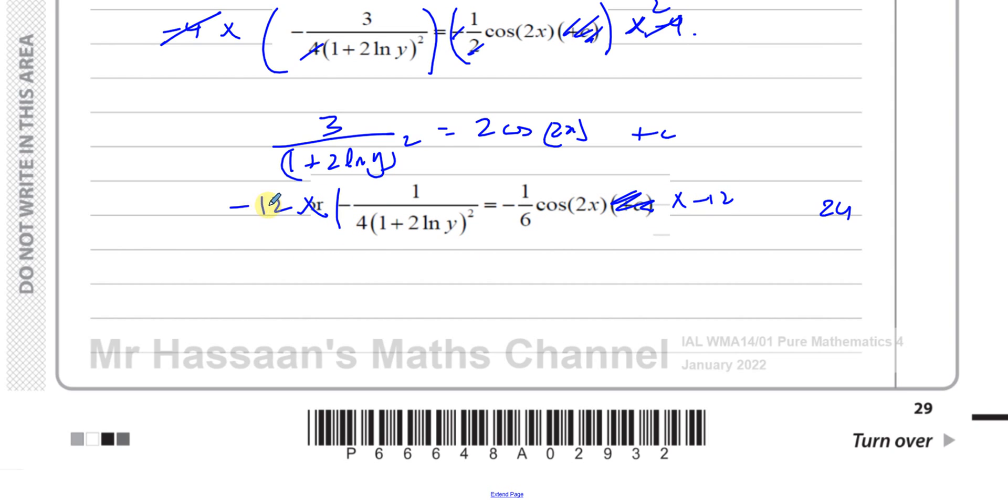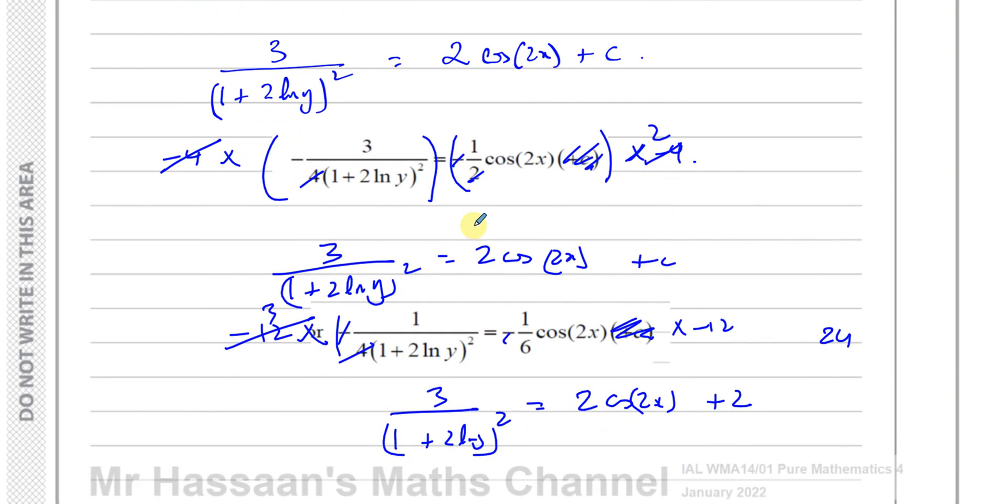What's going to happen? They cancel, that becomes plus, you're left with 3 over (1 + 2ln y)² equals and the minus and minus cancel, you're left with 2cos(2x) and then you add 2. Exactly the same as what I got.